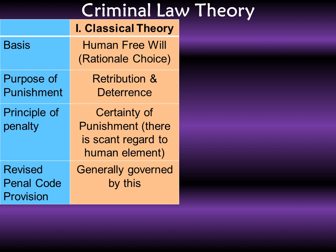In the classical theory of criminal law, the principle of penalty is very simple: for every crime there is a proportionate penalty. That's why it was written in the book of Cesare Beccaria — the principle of certainty of punishment — written in the book 'On Crimes and Punishment.' The only thing not so good about the classical theory is there is scant regard to the human element — it does not consider other factors that affect the free will of men. It looks upon all men as rational beings. Based on our analysis, the Revised Penal Code of the Philippines is majorly patterned from the classical theory, because for every crime there is a specific penalty.